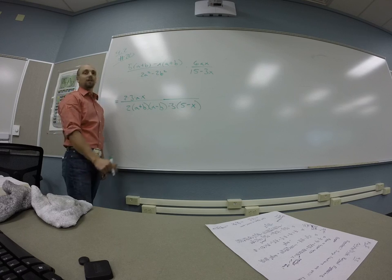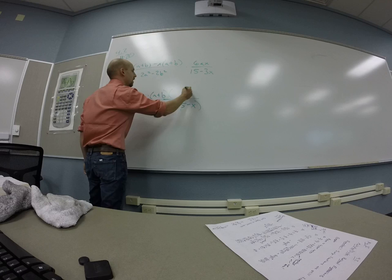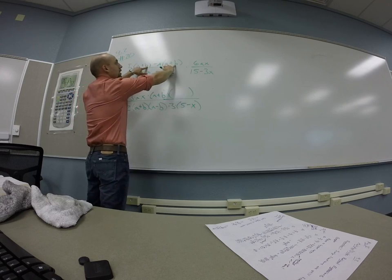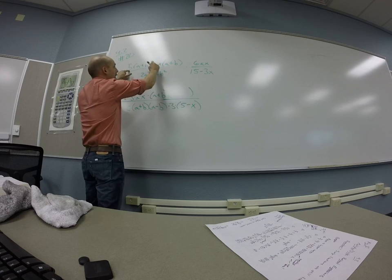You can factor the a plus b. Good, so we can factor an a plus b out of that thing. What are we left with? Five minus x. You guys see that? If I take an a plus b out of this guy, I'm left with a five minus x.